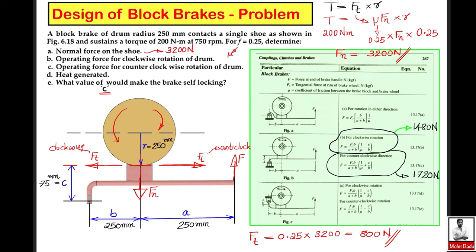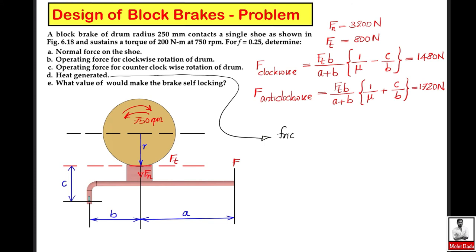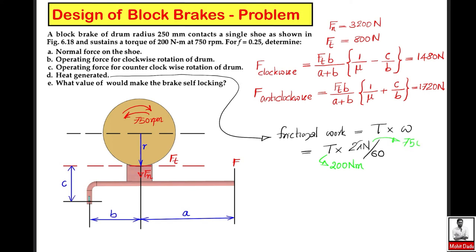Now we evaluate the heat generated due to friction. The heat generated equals the frictional work done due to the braking action, which is the frictional torque multiplied by the angular velocity of the drum. So Q = T × (2πN/60) = 200 × (2π × 750/60) = 15.71 kilowatts, which is 15.71 kilojoules per second.